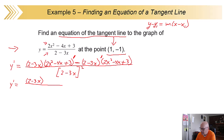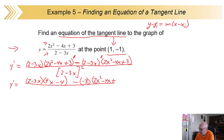On the top, first of all — the derivative of the top: bring that 2 out front, so 4x to the first, minus 4, and the derivative of 3 is 0. Bring the minus down. For the second part, the derivative of 2 minus 3x is just minus 3, and we copy 2x squared minus 4x plus 3. And on the bottom, 2 minus 3x squared.